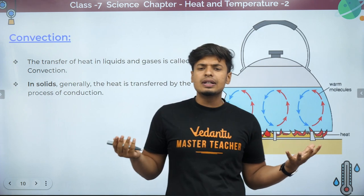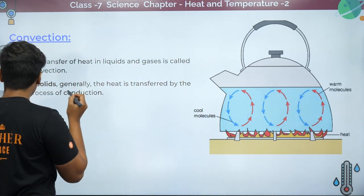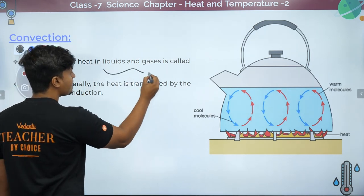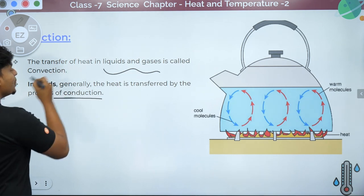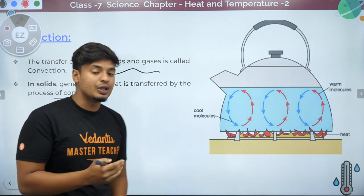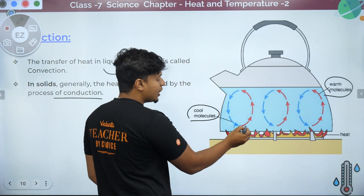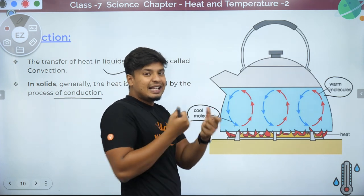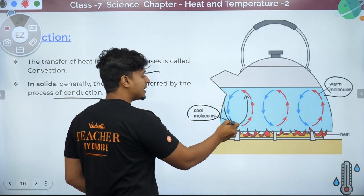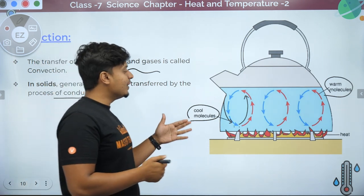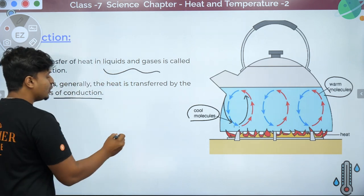Now, what about liquids and gases? The transfer of heat in liquids and gases is called convection. How does this happen? Through the movement of molecules. In a pot of water, once molecules are heated and gain energy, they go up — the hotter molecules rise so that cooler molecules come down and take their place. This cycle keeps happening, transferring heat through the movement of molecules.